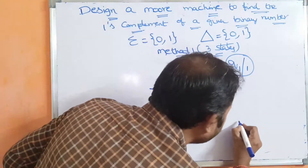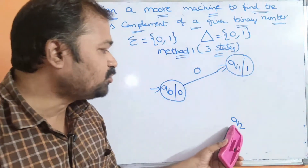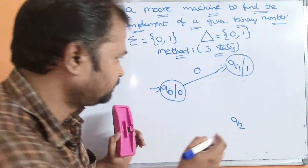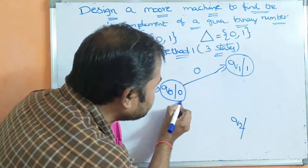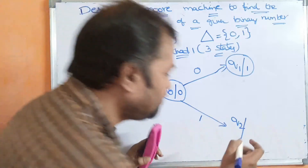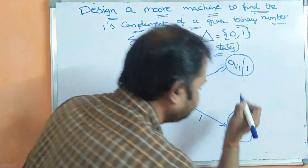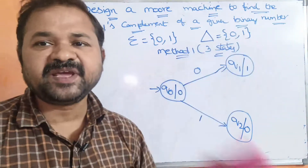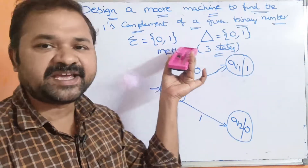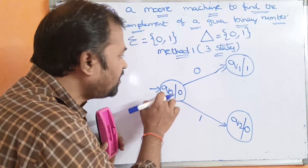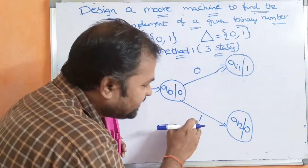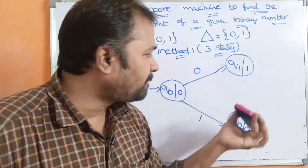We need one more state, q2. q2 accepts 1 as the input, and the output of q2 is 0. Moore machines are nothing but DFAs, so each state must use all symbols present in the input alphabet. On q0, if 0 is the input then the output is 1, and if 1 is the input then the output is 0.